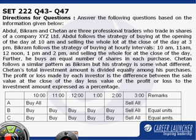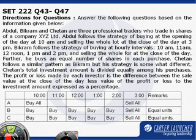In this question, the strategy being followed by three different people A, B and C on the stock exchange can be summarized quickly in a tabular form. We can see that A is buying at 10 and selling everything at 3 p.m., at close of the day.